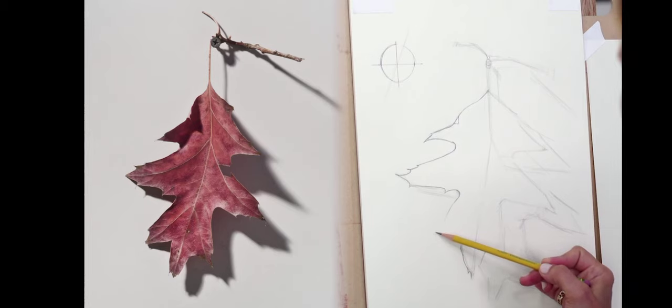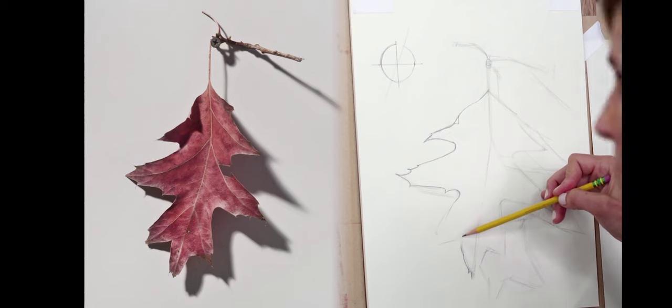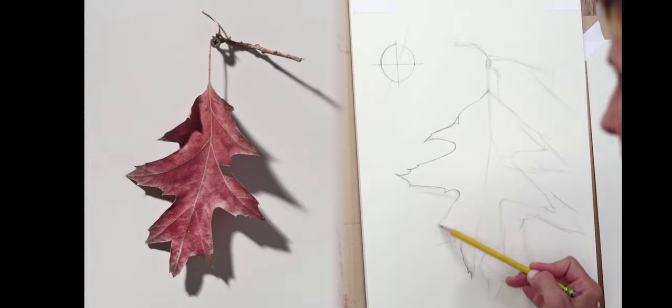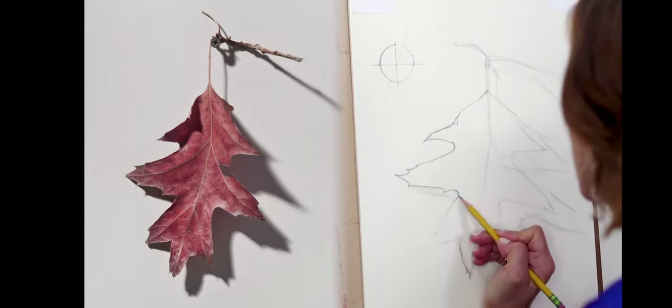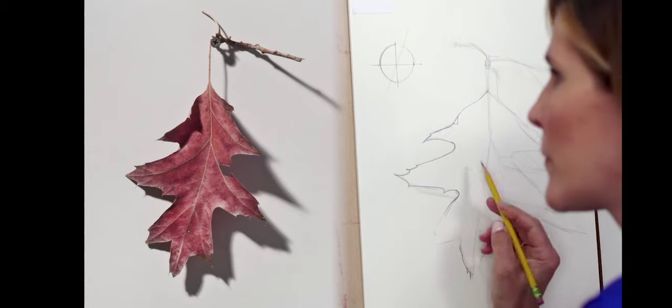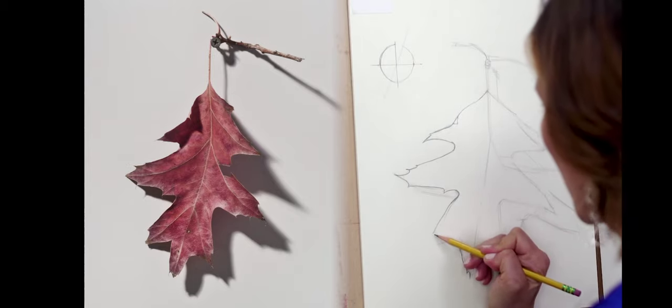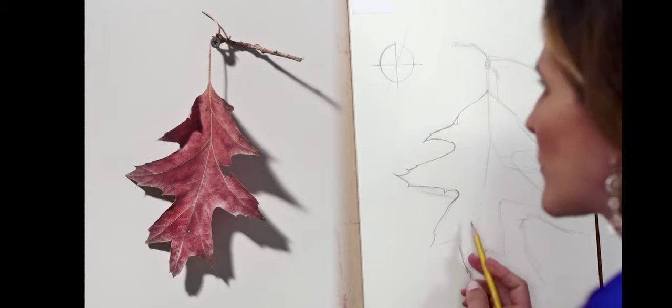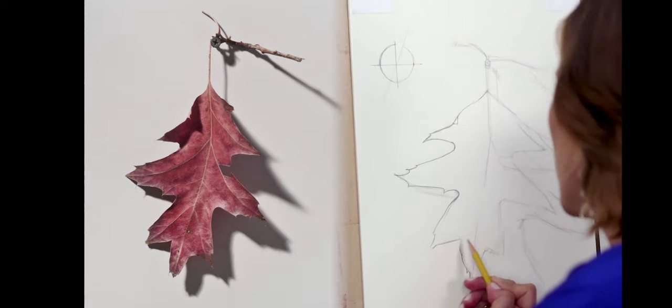And now I'll just first kind of go point to point, almost redoing that first block in, showing, making marks for where I want to make my correction. And then once I've done that, then I'll redraw the contour. Something a little bit more like that.